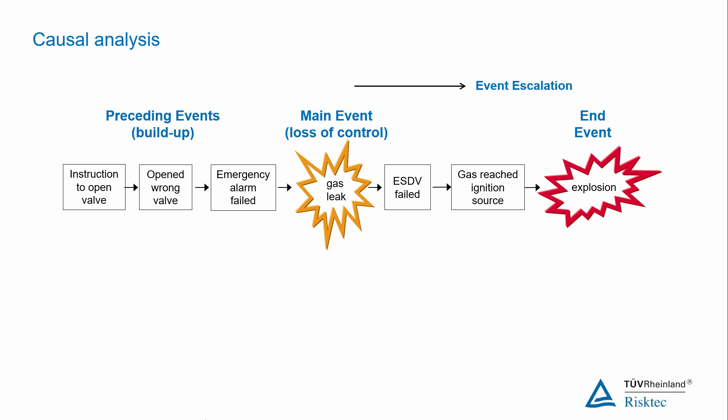We've now established what happened and illustrated it on a timeline. Then you have to start asking why for each step on the timeline so we can identify the causes of the event.